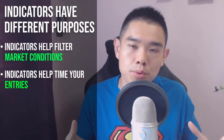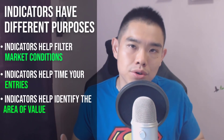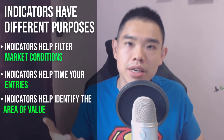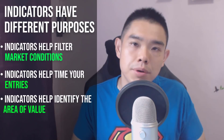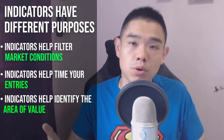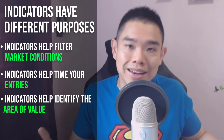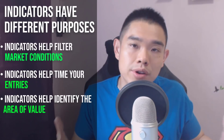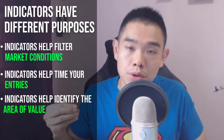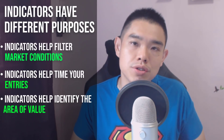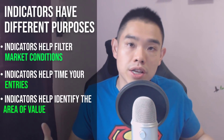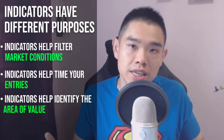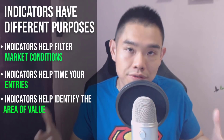You can also use indicators to help you identify areas of value on your chart. For example, in a healthy trend, price tends to bounce off the 50-period moving average. If you see it bouncing off two or three times, that's an area of value that the market is respecting, and you can look for buying opportunities at the 50-period moving average.